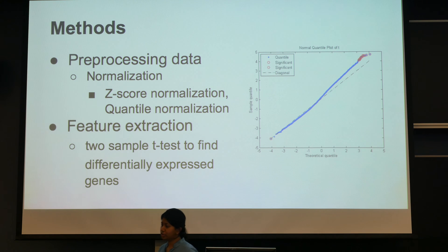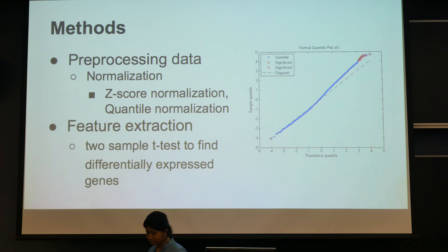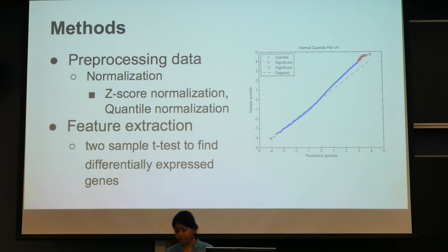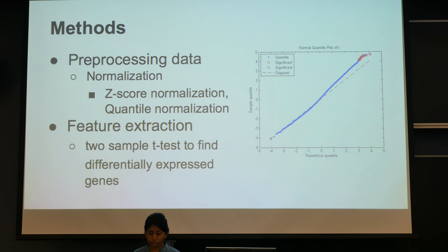We do feature extraction in two steps. The first step uses two-sample t-tests, which can significantly identify genes that are differentially expressed between the two types. The genes shown in the red circles are the differentially expressed genes, and we pick those out to concentrate on for classification.